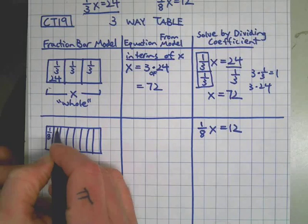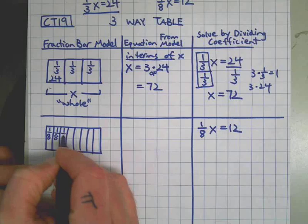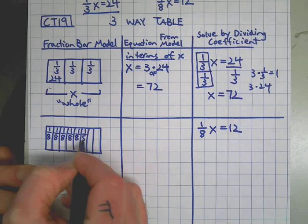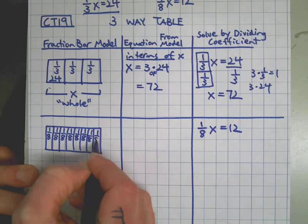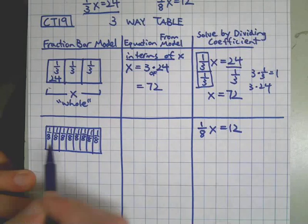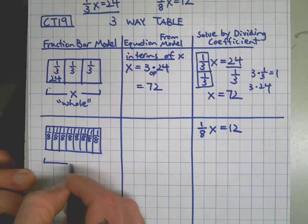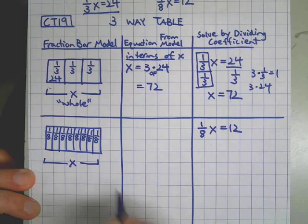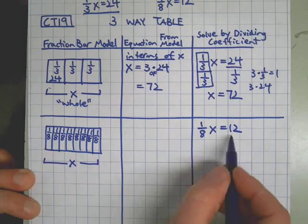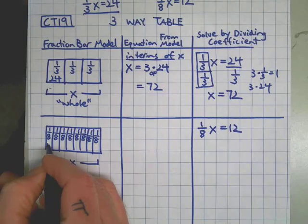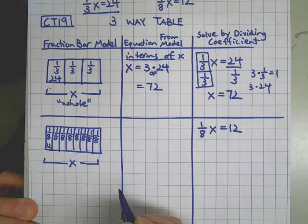Each one is worth one-eighth of the whole, right? I'm going to count them just to make sure I didn't make a mistake. One, two, three, four, five, six, seven, eight. Yes. And I need to remember to label the whole, right? That's x. And then each piece is worth 12, according to my original equation. Put a 12 in there.